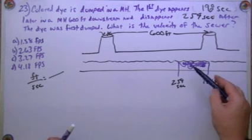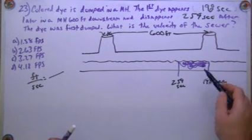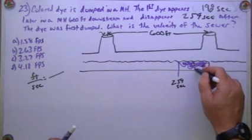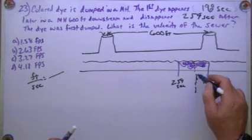When you dump the dye in there, this dye mixes with the flow and you can get a good average velocity by figuring out what that time would be right in the middle.